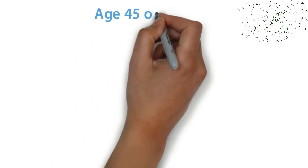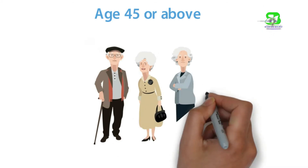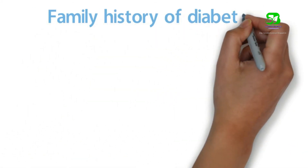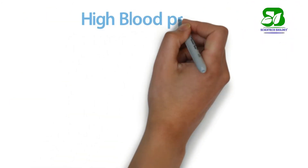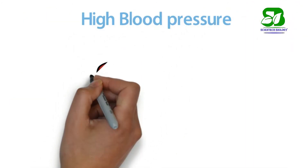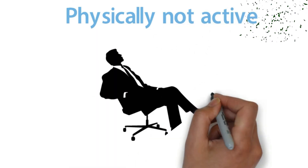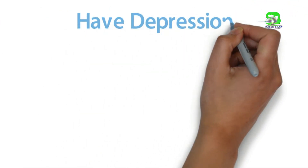Risk factors for Type 2 diabetes include: your age is 45 or above, if you have a family history of diabetes, if you have high blood pressure, if you are less physically active, and if you have depression.